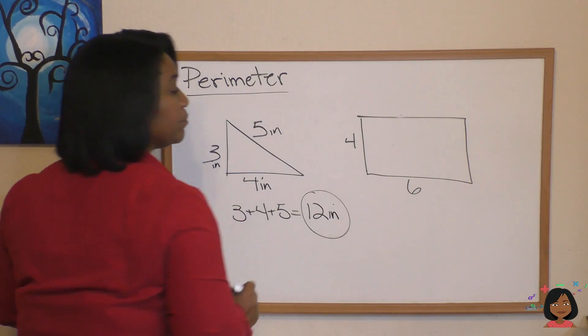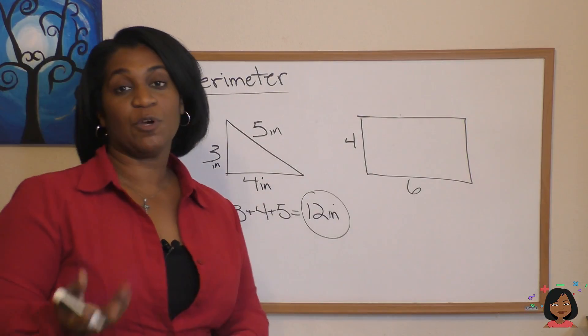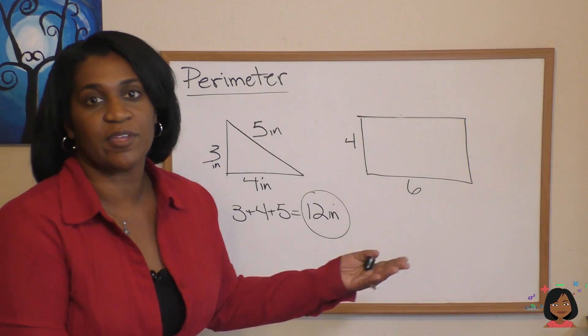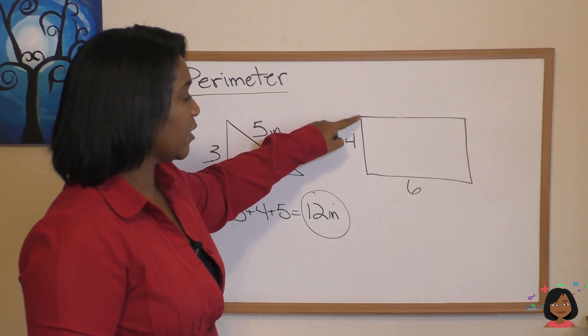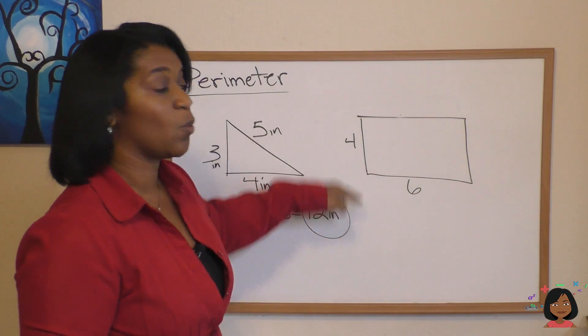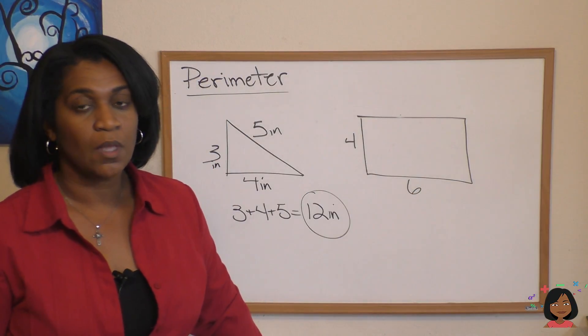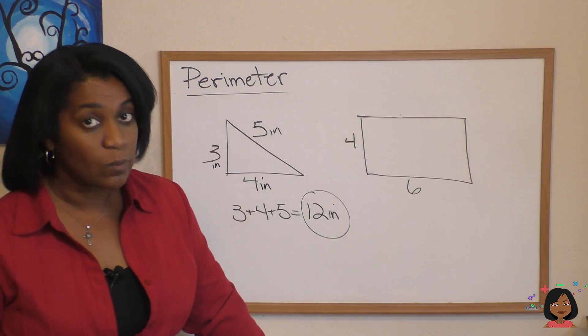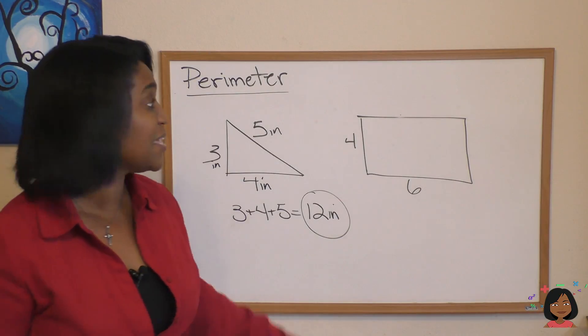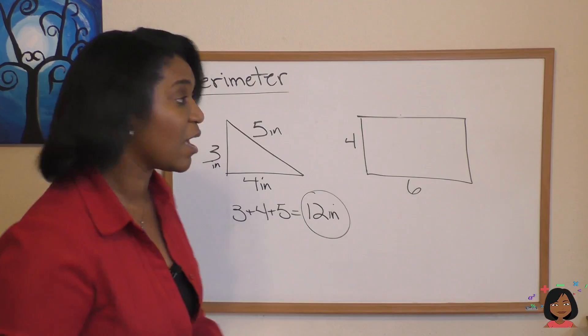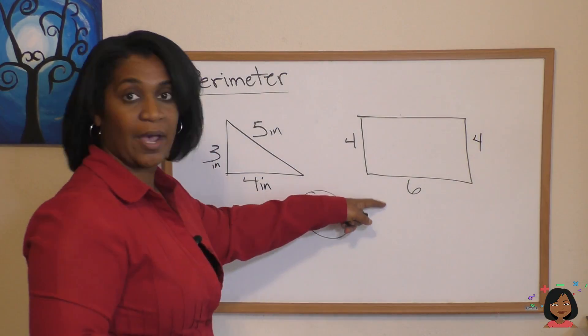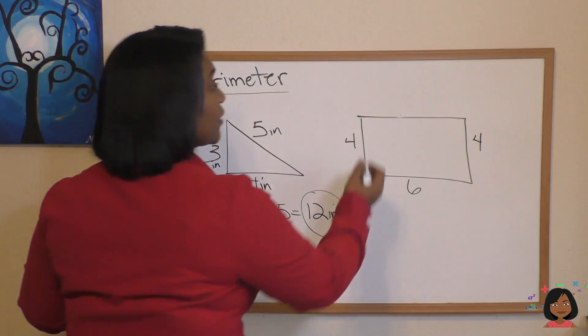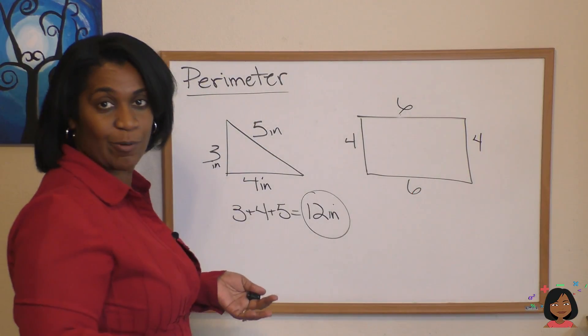What if they give you a rectangle but they don't tell you what everything is? Well, they told us here that the length is 6 and the width is 4. How do we find the other sides? Well, it's a rectangle, right? It means that this side is equal to that side, which is a 4, and this side is equal to that side, which is a 6.